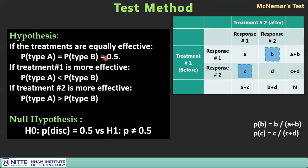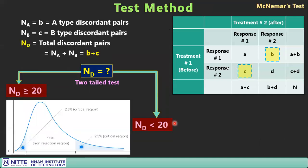The null hypothesis states that all probabilities are equal — there is no difference between the treatments. For discordant pairs, p(Type A) = p(Type B) = 0.5. The alternative hypothesis for a two-tailed test is that p ≠ 0.5. For a one-tailed test, it can be either less than or greater than 0.5.